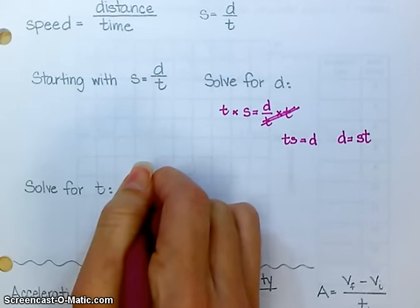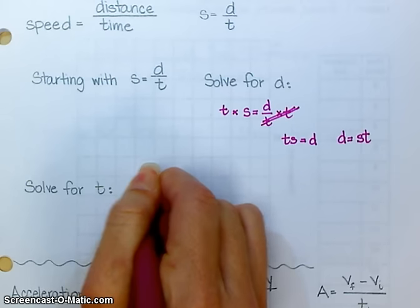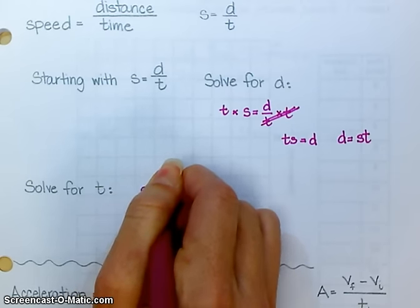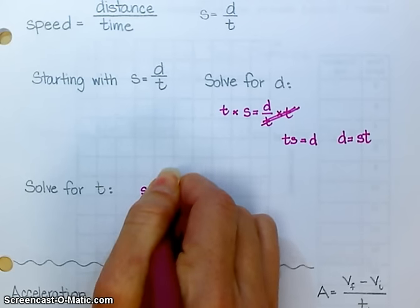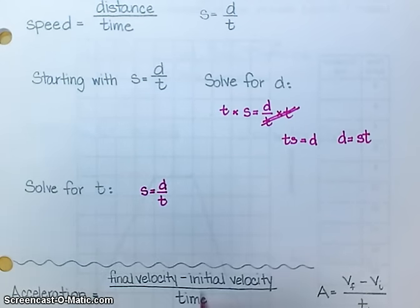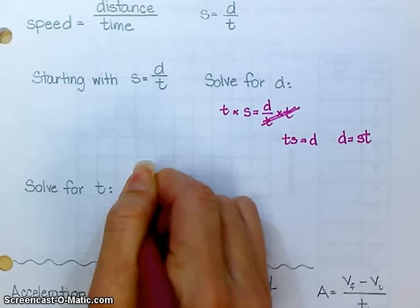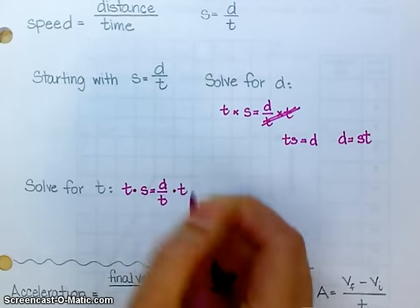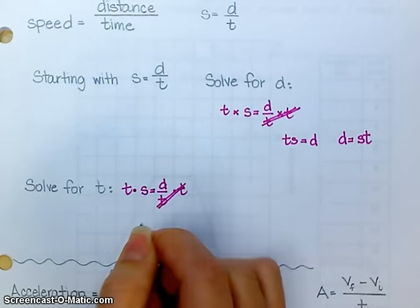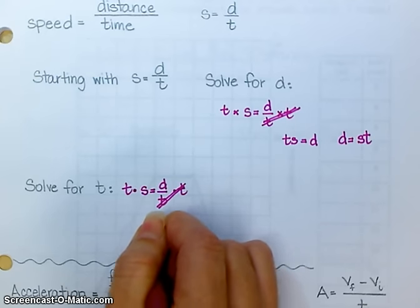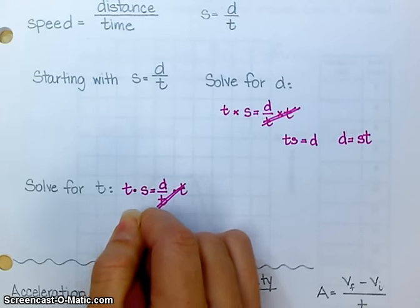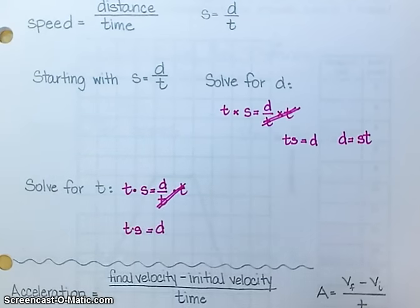To solve for time, begin with your original equation. Multiply both sides by t. I get distance equals time multiplied by speed. But it's not solved for time yet. Anybody know what I need to do to get time all by itself?